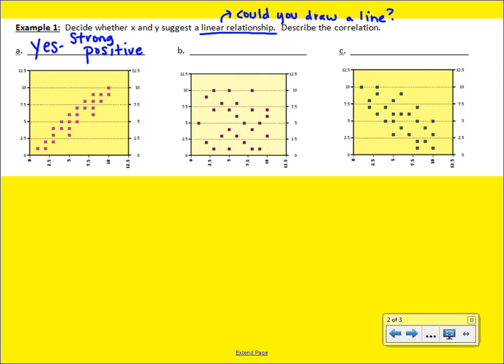Looking at the second graph, the scale is the same as the first, but you can see that my points are all over the place. And they don't really seem to be going up or down. They're just kind of just out there. And so this particular graph would have no correlation.